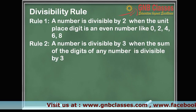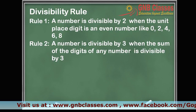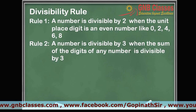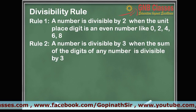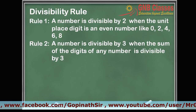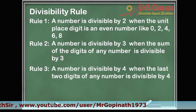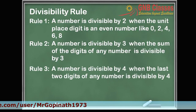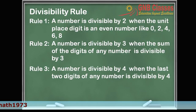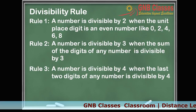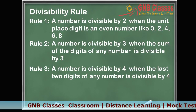Rule 3 is for checking whether a number is divisible by 4 or not. A number is divisible by 4 when the last two digits of that number are divisible by 4. That is, if the last two digits are divisible by 4, then the whole number will be divisible by 4.